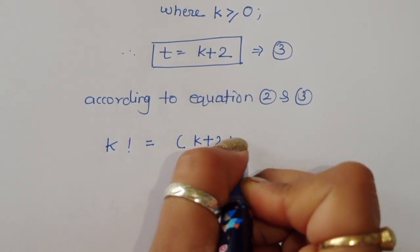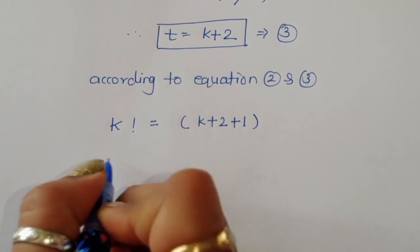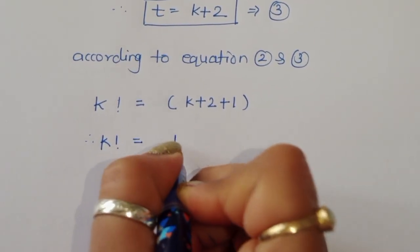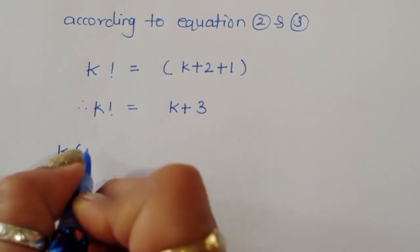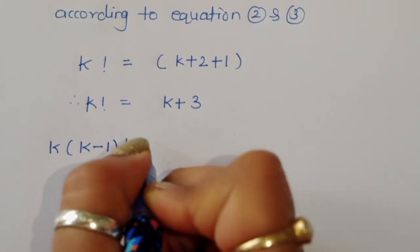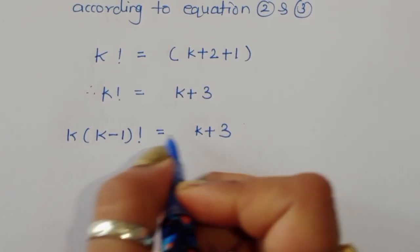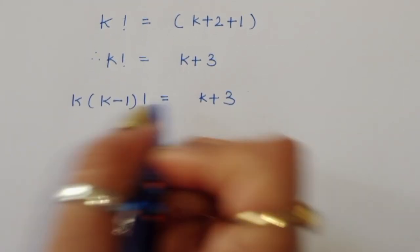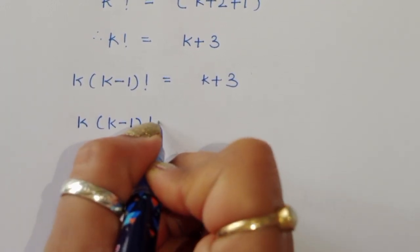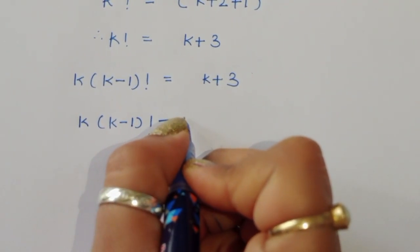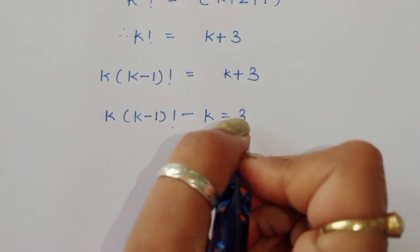So factorial of k equals t plus 1, which is (k plus 2) plus 1, giving us: factorial of k is equal to k plus 3. We can expand this as k times (k minus 1) factorial equals k plus 3.